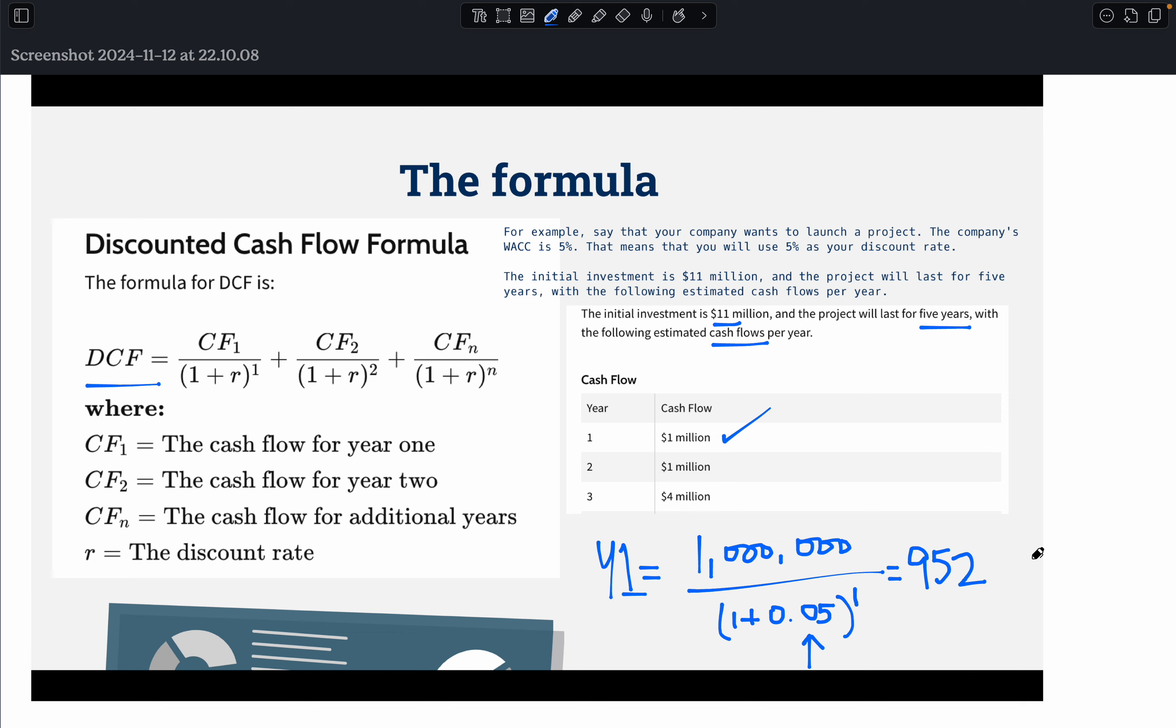And that should come to 952,381. So that's our discounted cash flow value for year one.